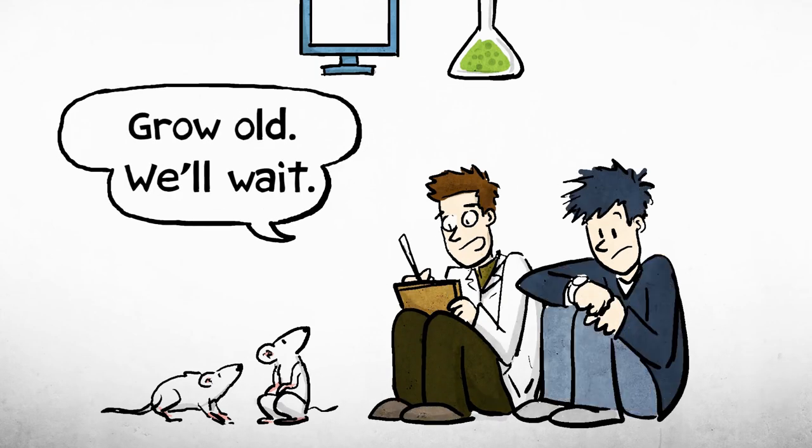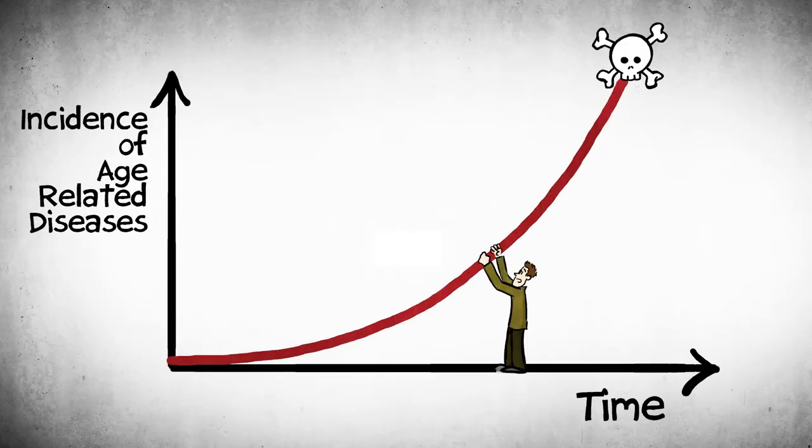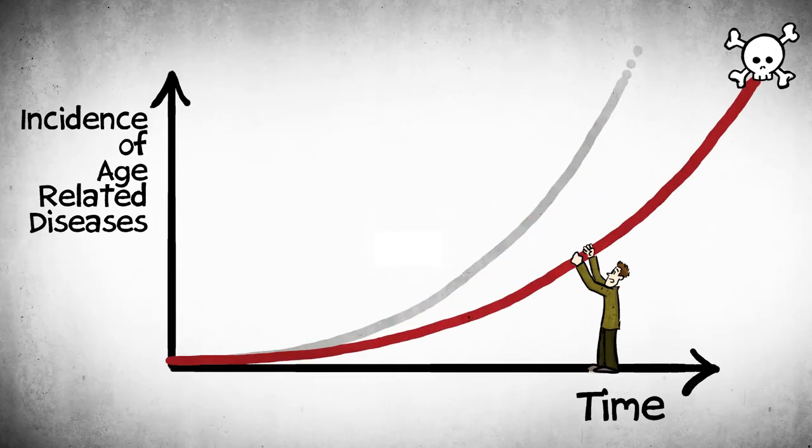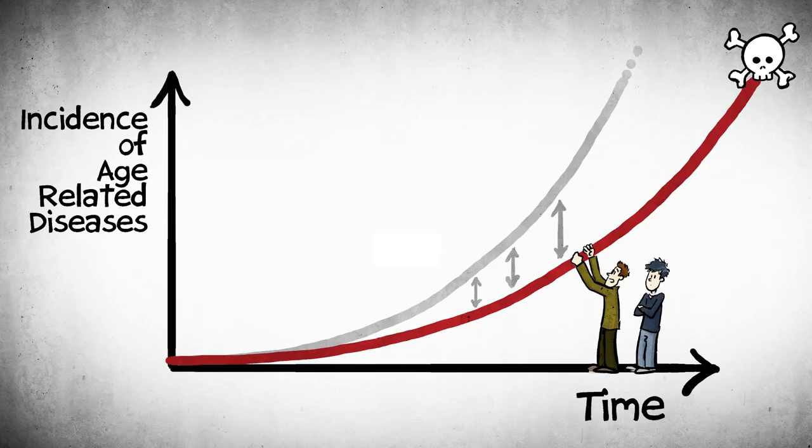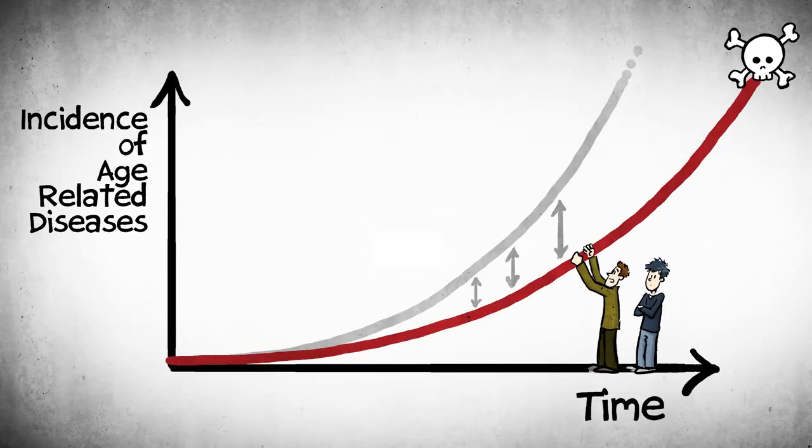If you could slow down the process of aging just by seven years, this would reduce in half the incidence of age-related diseases at every single age. This would have a massive impact on human lifespan and on human health.